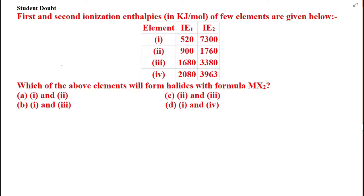This is a student doubt. Let's read the statement first. First and second ionization enthalpies in kilojoules per mole of four elements are given. They have given you ionization enthalpy one and ionization enthalpy two for these four elements. Out of these, which element will form a halide with molecular formula MX₂?